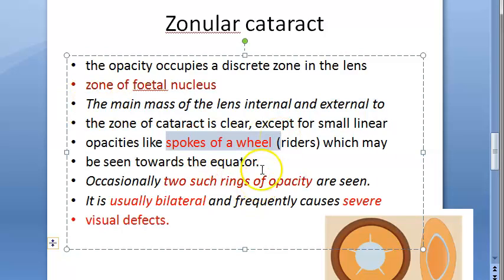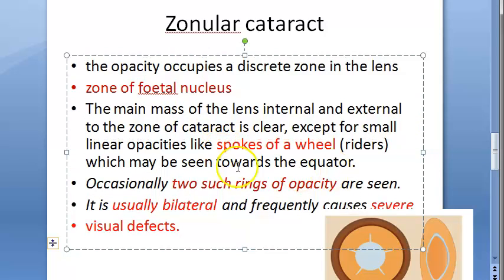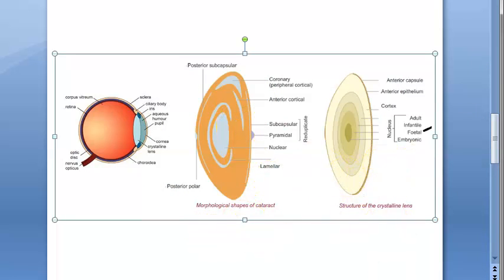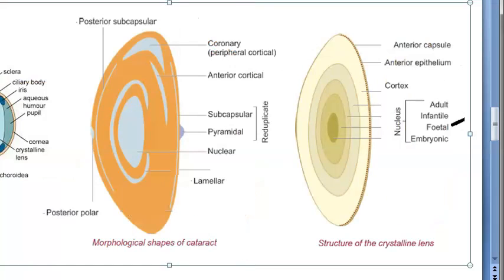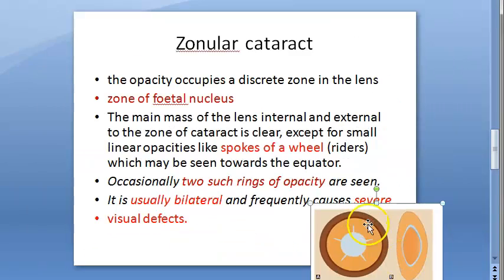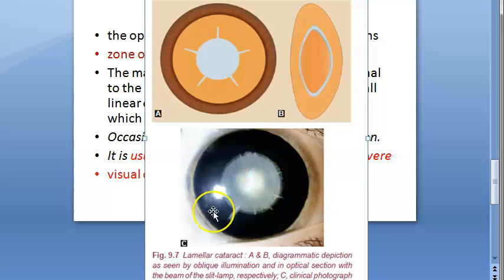Additionally, there may be spokes of wheel appearance seen towards the equator of the lens. The entire lens is fine except the fetal nucleus, but these spoke-like opacities can also be present in other parts extending toward the equator — appearing like spokes of a wheel.